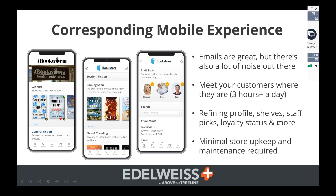A key to this whole thing, on the email side as well as the mobile side, is having it be something that's easy to maintain. When we bring stores on, we can essentially populate this mobile site without the stores having to do anything, because we have the inventory and the shelves from BookLog, Basil, Anthology, IBID, or whatever point of sale system you have. We have the staff picks if they're in there. There's a lot of information we can get from Edelweiss and analytics that makes it easier to maintain this as well.